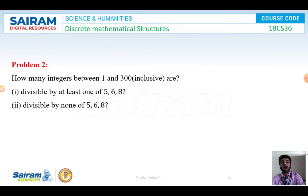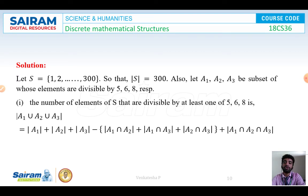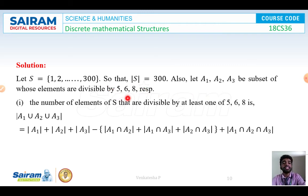Problem number 2: How many integers between 1 and 300 inclusive are divisible by at least 1 of 5, 6, or 8, and how many are divisible by none of 5, 6, or 8? Since S contains the numbers from 1 to 300, the order of S is 300. We define 3 events: A1, A2, A3 as subsets of S, where A1, A2, A3 denote the integers divisible by 5, 6, and 8 respectively.